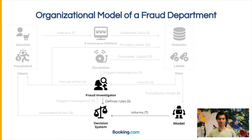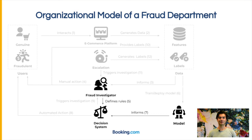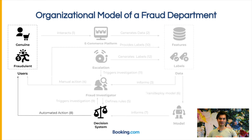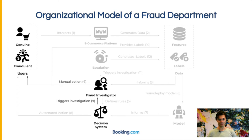Then you have a decision-making system that has to make a decision based on the output of the model and the output of all the rules put in production by the fraud investigators. One decision could simply be to do nothing if the system believes it is not a fraudulent case. However, if it believes it is fraud, the decision-making system needs to decide whether to make an immediate automated action — like blocking the registration or transaction — or instead escalate the case to the fraud investigator for a deeper manual look and possible manual action later.